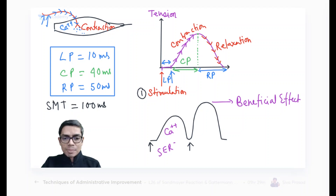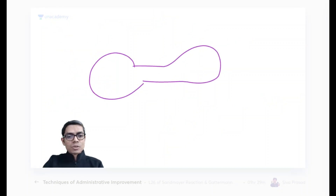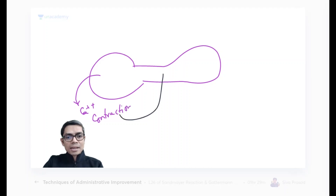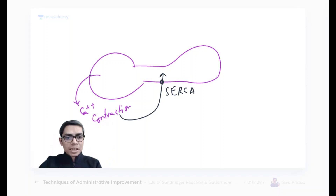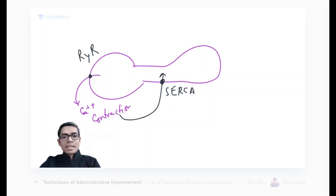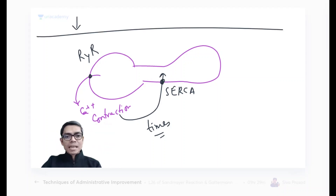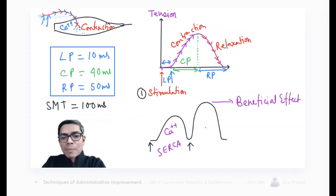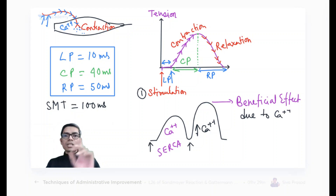The calcium returns to the sarcoplasmic reticulum by the sarcopump. Calcium exits via the ryanodine receptor channel, then goes back by the sarcopump. This process takes some time. Within this time, if you give another stimulation — when calcium is already in the cytoplasm and you stimulate again before all the calcium returns to the sarcoplasmic reticulum — the amount of calcium during the next contraction will be high, so the height of contraction will also be higher. This phenomenon is known as the beneficial effect, and it is due to the calcium molecule.